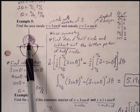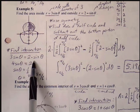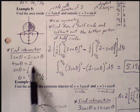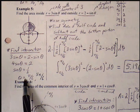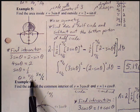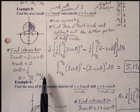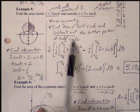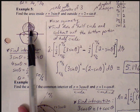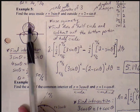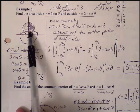We find the intersections to determine the bounds. Setting 3 sine theta equal to 2 minus sine theta: combine to get 4 sine theta equals 2, then divide by 4 to get sine theta equals one half. Sine equals one half at pi over 6 and 5 pi over 6. Using the area formula, one half r squared gives us the entire region, and we subtract out the lower portion of the half circle using the limaçon.